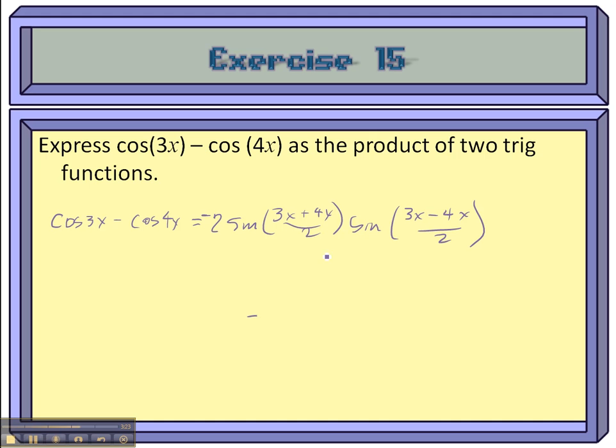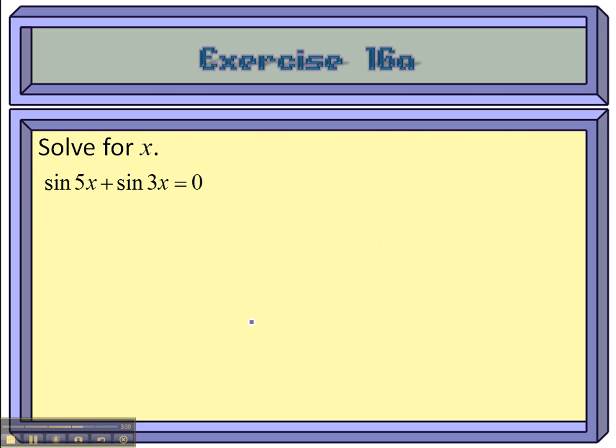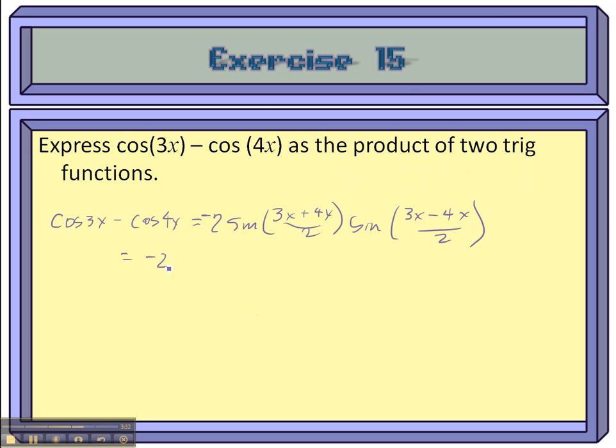Okay, so now I'll simplify. Negative 2. Sine of, that's 7x divided by 2, 7x over 2. And then sine of, that would be negative x over 2, negative x over 2.